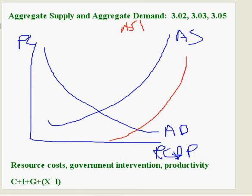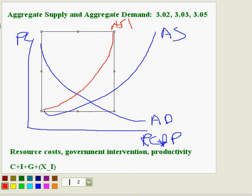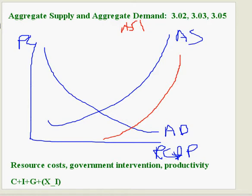If we have an increase in business taxes, that would cause aggregate supply to shift to the left. A subsidy would cause aggregate supply to shift to the right. If workers are more productive, we will see aggregate supply shift to the right.